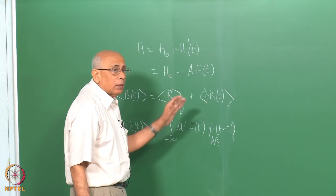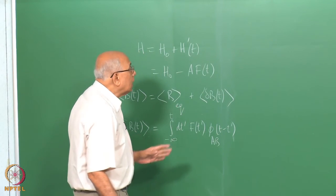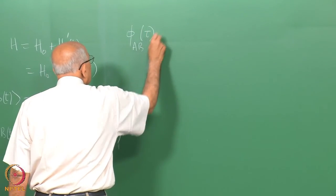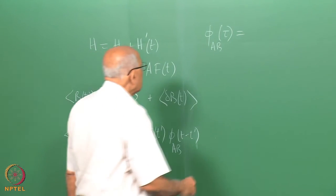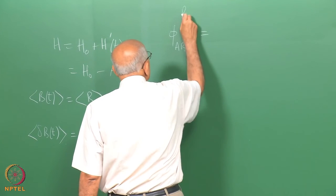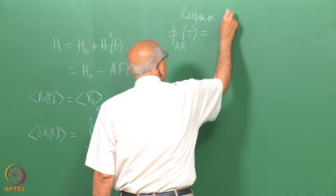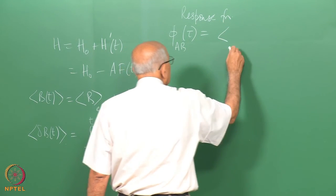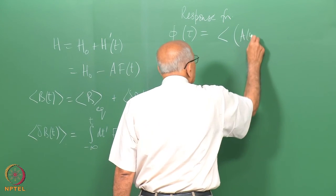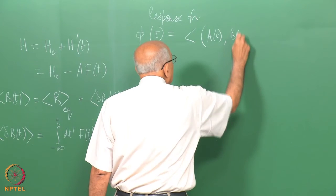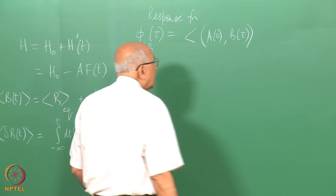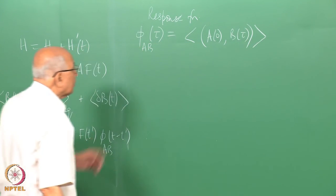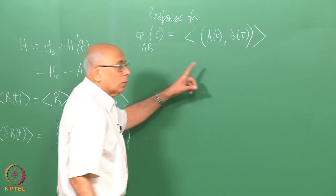This response function is a certain equilibrium correlation function. Specifically, φ_AB(τ) — setting τ = t − t′ — equals the equilibrium expectation value of A(0) with B(τ), either as a commutator or Poisson bracket, apart from a numerical factor. This is what the response function is in equilibrium.